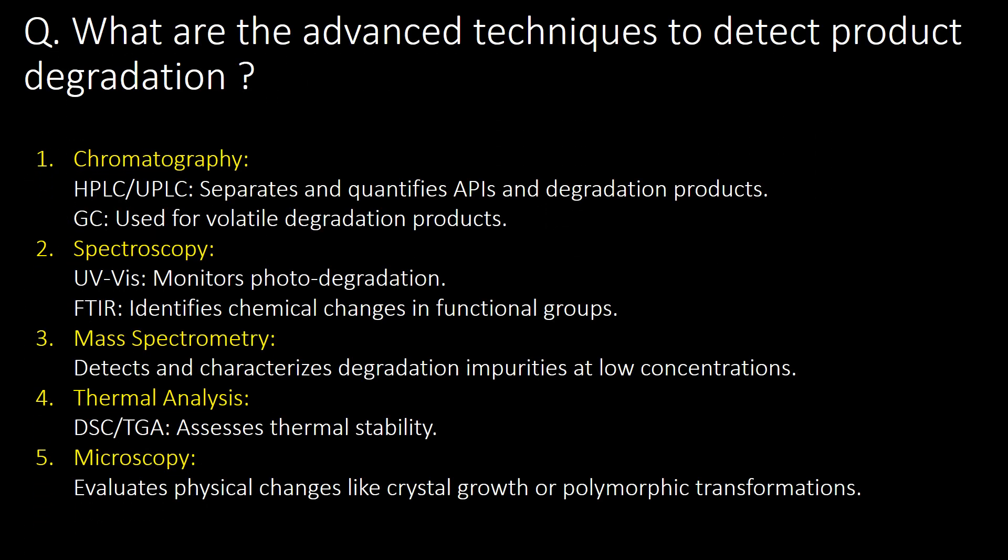What are the advanced techniques to detect product degradation? Chromatography using HPLC, UPLC, or GC; spectroscopy; mass spectrometry; thermal analysis; and microscopy are the advanced techniques to detect product degradation.